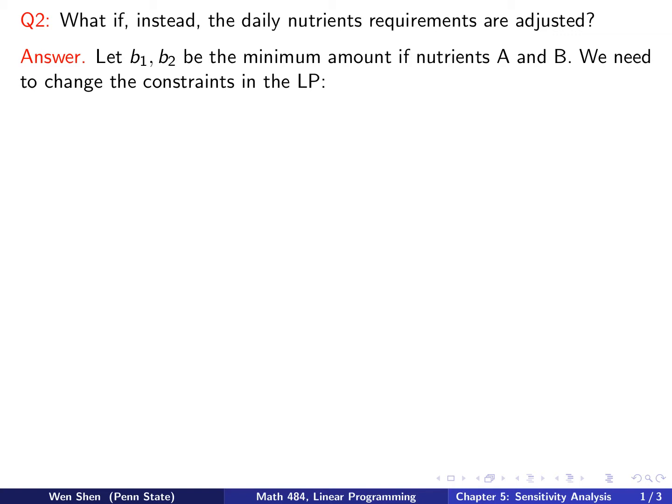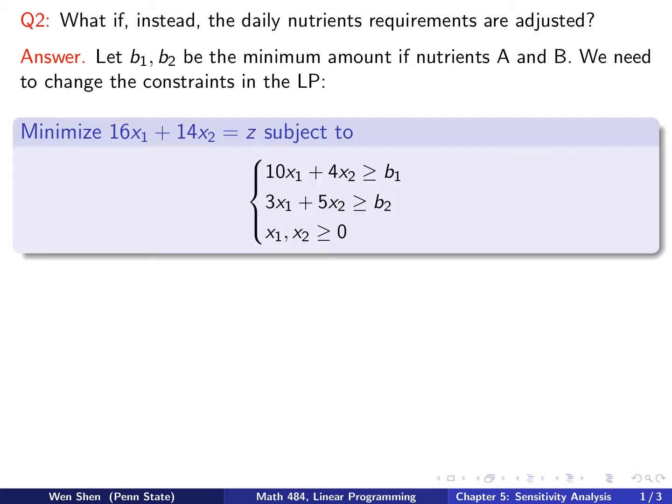So now let B1, B2 be the minimum amount of nutrients A and B. So with this change, we will need to change the constraints in the LP problem. Okay, so our minimization problem is now being adjusted. That's the same, and these are changed, the constraint. And the right-hand side is now being replaced by B1 and B2.